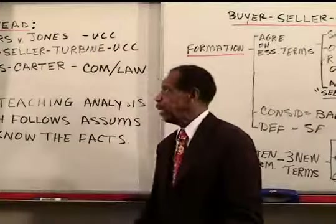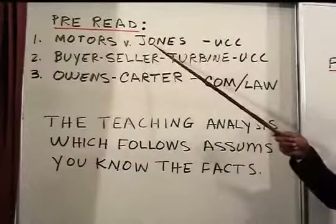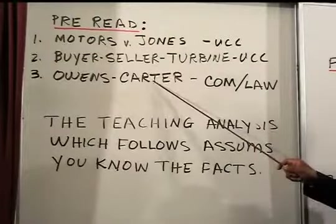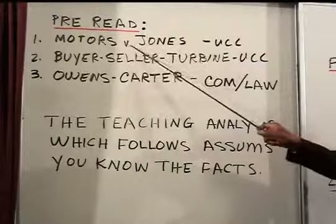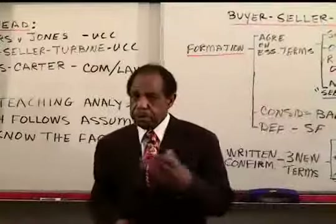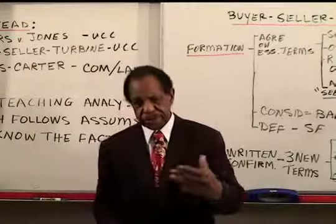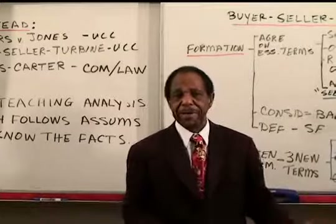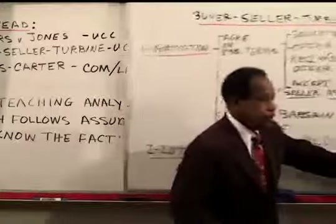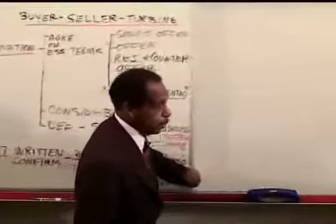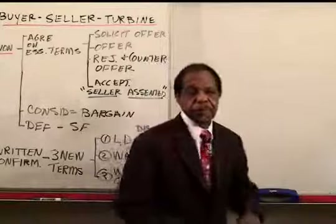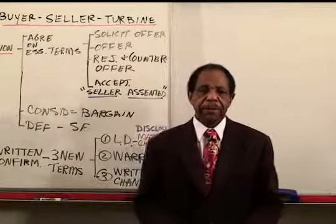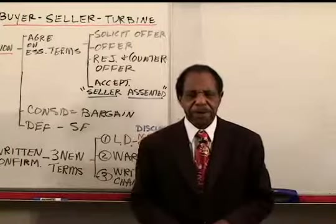In this lecture, we're going to summarize the analysis of these problems which we've been carrying along through the discussion so far. We'll begin with Motors versus Jones, making use of what we have learned, and do a summary analysis, pointing out exactly what you would write in certain places. Motors has sued Jones in count one for $15,000, and you are asked whether or not Motors is entitled to that $15,000.